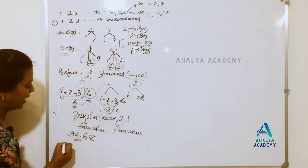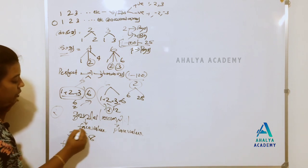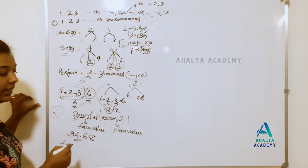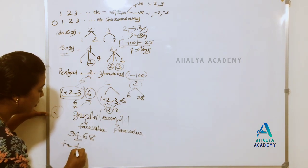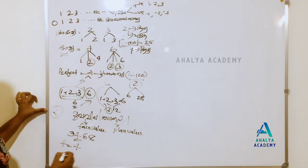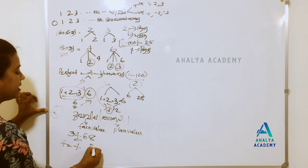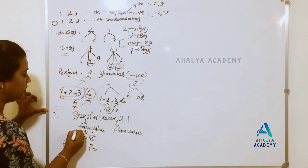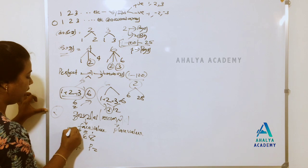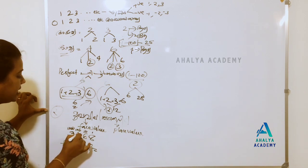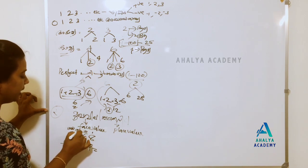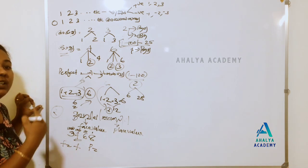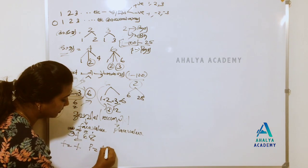If you say face value is the same as face value, you don't have a number of times. The face value of 4 is 4 itself — that is the face value. So 4 is the face value.